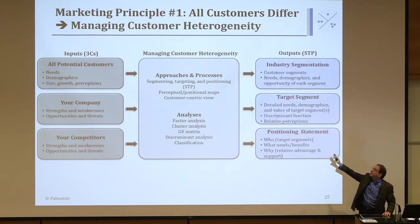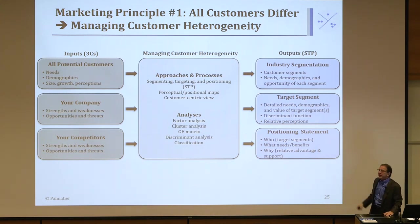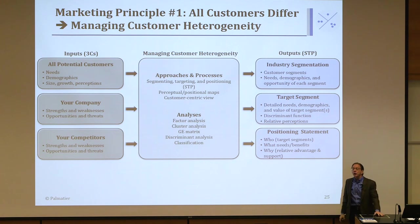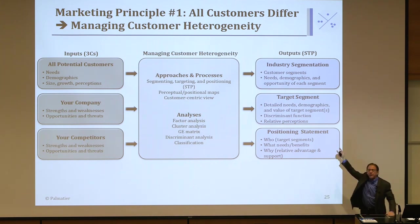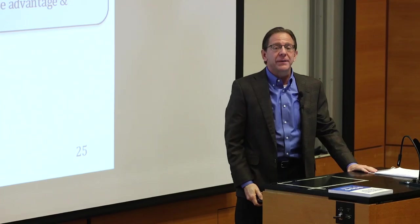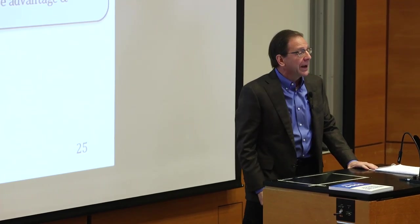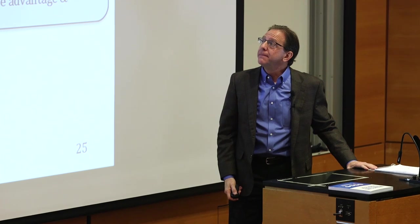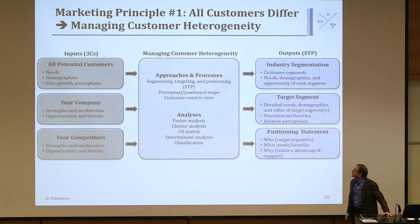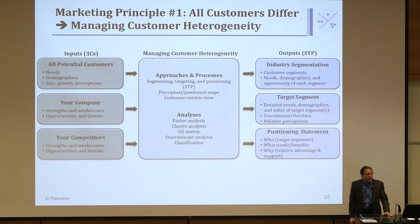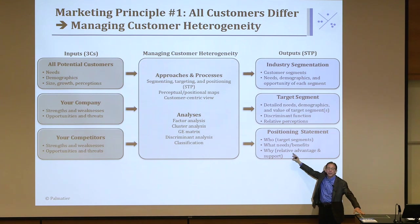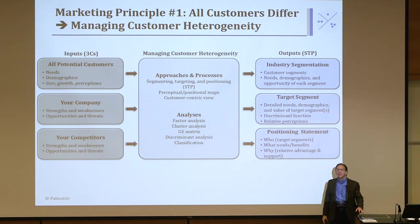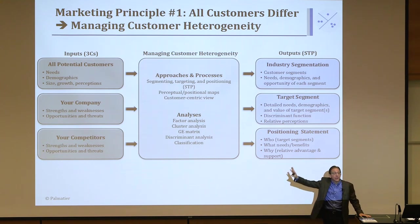What do you get out of this? Probably most importantly, you get a road map — a picture of the whole industry showing all the segments and their descriptions. Then you come up with the attractiveness and your strength in each segment that allows you to pick your target segment. You also learn how to find those people in the target segment. Third, once you've picked your target segment, you write a positioning statement that clearly describes — both for people inside and outside your firm — who is the target segment, what do they need, and how are you going to offer them something advantageous.